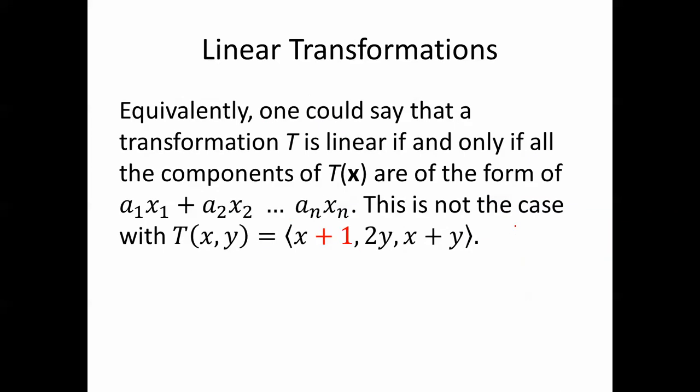Equivalently, one could say that a transformation T is linear if and only if all the components of T(x) are of the form a1*x1 + a2*x2 + ... + an*xn. For example, if T(x,y) = [x+y, 2x-y, 3x], something like that. This is not the case with T(x,y) = [x+1, 2y, x+y]. You can't have the +1 there if it's going to be a linear transformation.